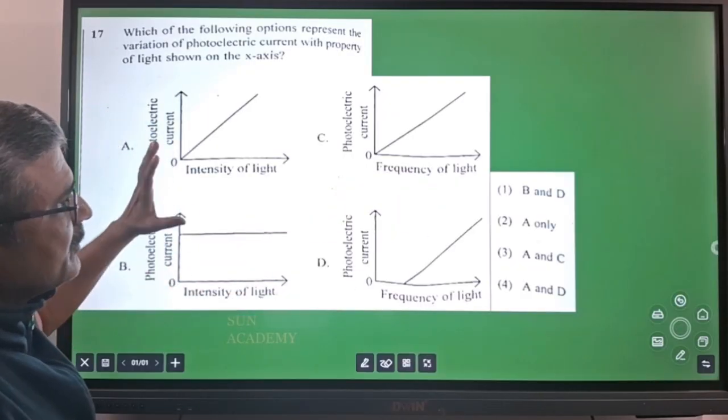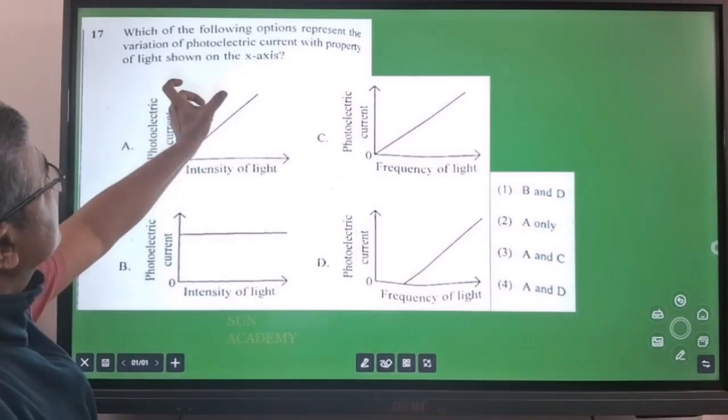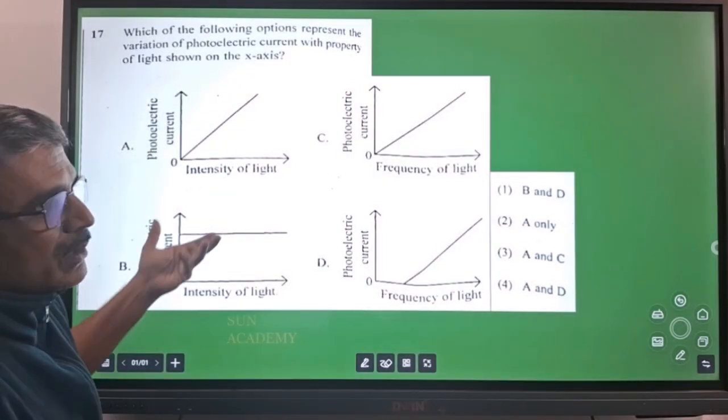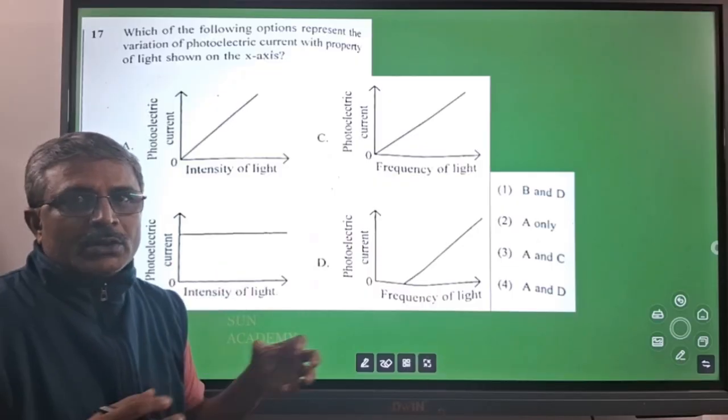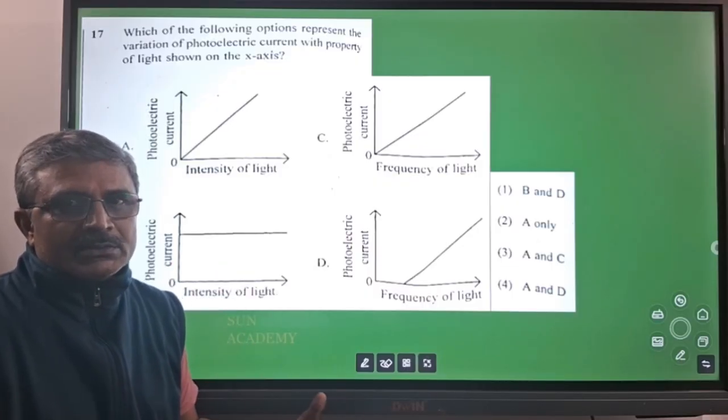Obviously with the concept we can say if you increase the intensity of the incident photon then your photoelectric current will increase. So you are increasing photons, you are increasing the intensity means you are increasing the number of photons.